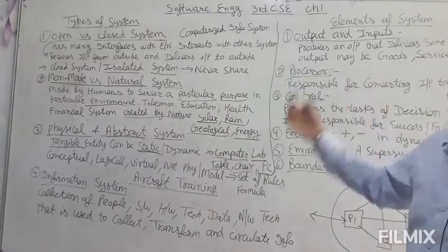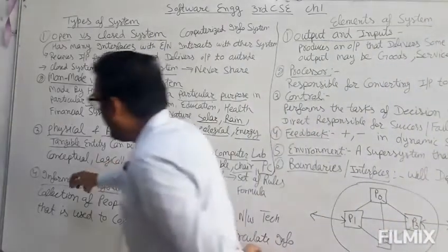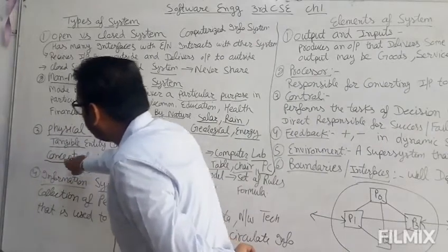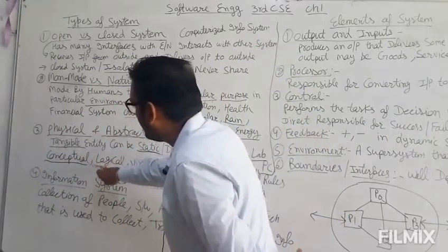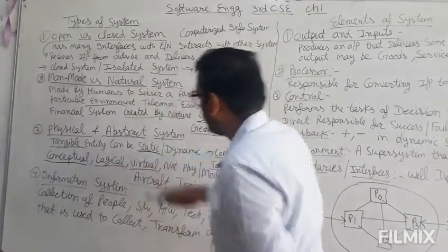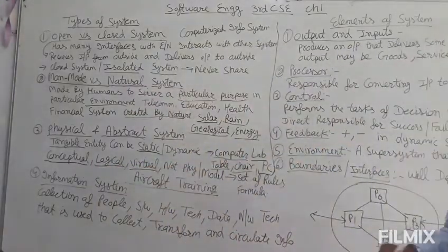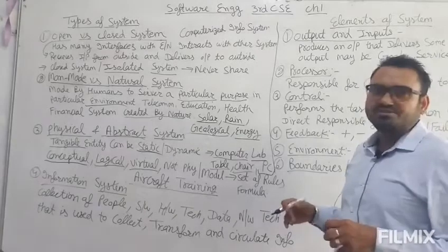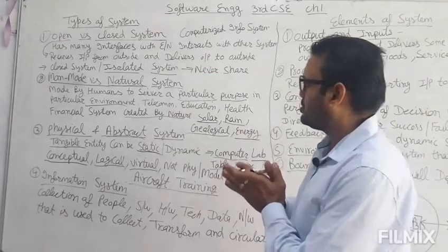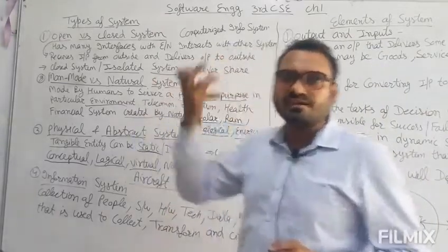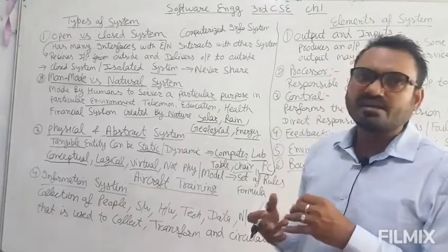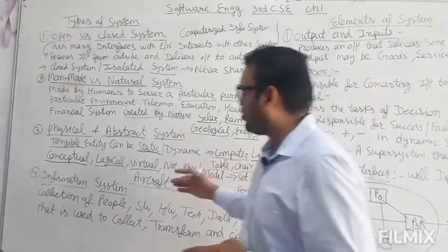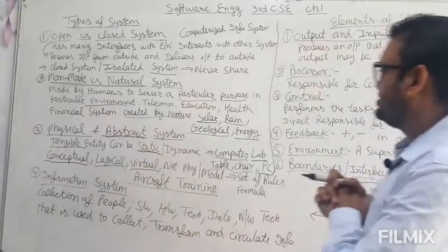The second category of this type is the abstract system. It may also be called a conceptual system, a logical system, or a virtual system. Virtual means which is not physical. A logical system is something we think in the mind which is not present in physical form. It is called an abstract system.